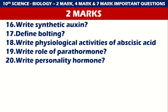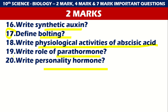Questions 16 to 20: Write synthetic auxins. Define bolting. Physiological activities of abscisic acid. Write the role of parathyroid hormone. And write about the personality hormone. Total five questions — defining bolting is important, and personality hormone is also very important.